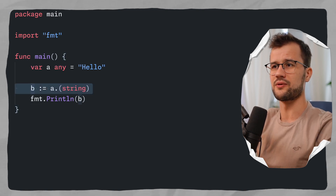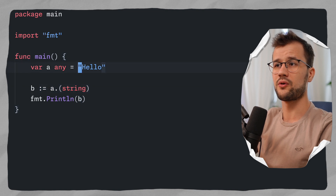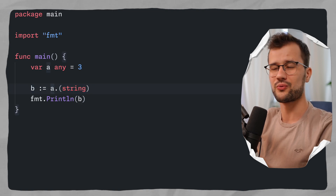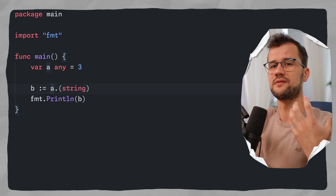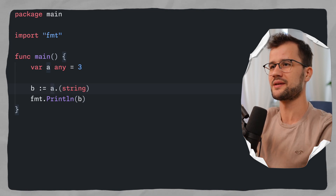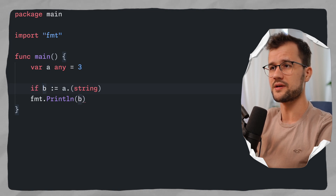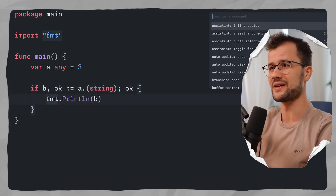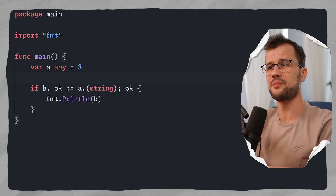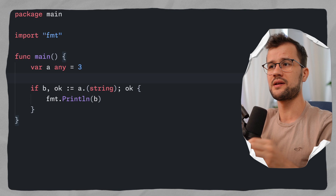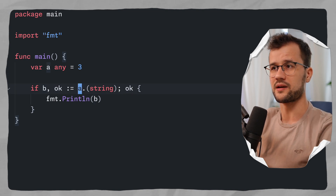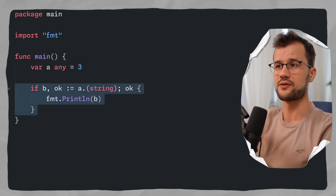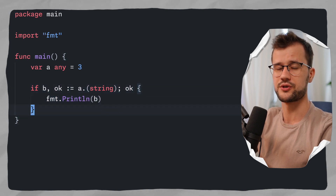The problem is this expression can panic. For instance, if 'a' is set to 3 instead, then this line will panic. To avoid this, we use an if statement with the two-value form: 'b, ok := a.(string)' and then 'if ok'. This is a simple one-line check to see if 'a' is really a string. If the expression doesn't panic, we print 'b'. Note that 'b' is only a string within this condition.